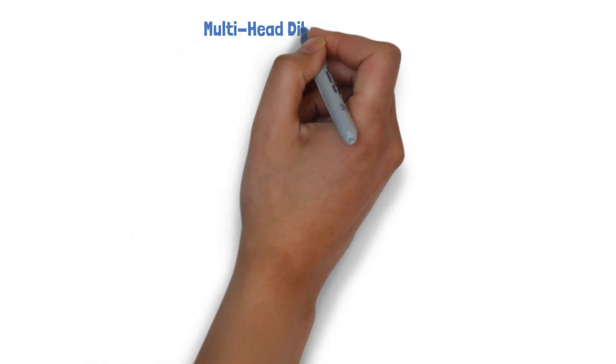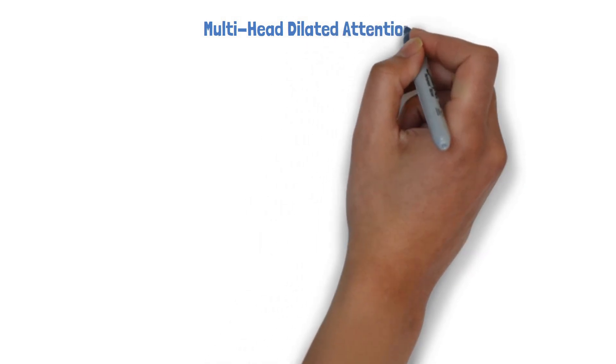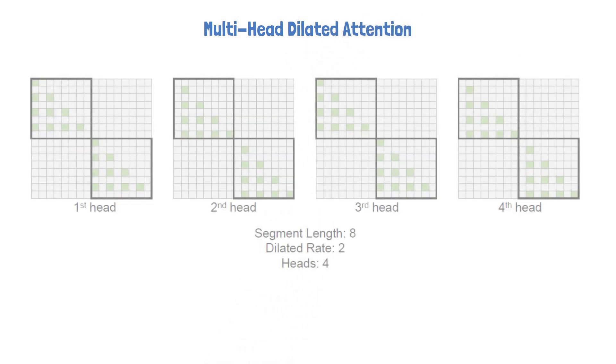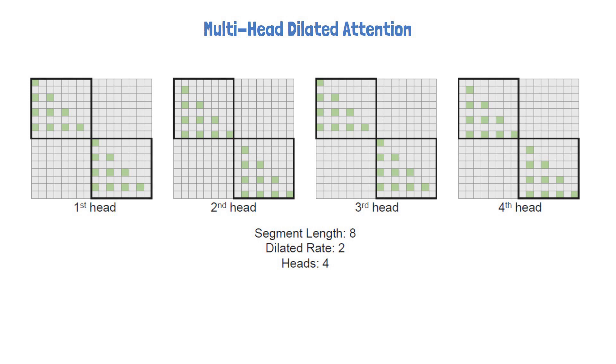To further diversify the captured information, they use multi-head dilated attention blocks, where for a given segment length, 8 in this example, and a dilation rate, 2 in this example, they choose different rows to remove, as we can see in the multiple heads here, so each head looks at different information.